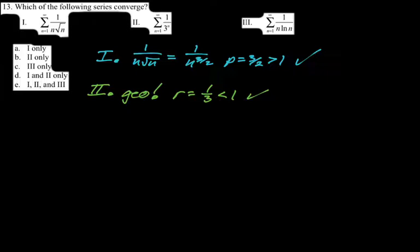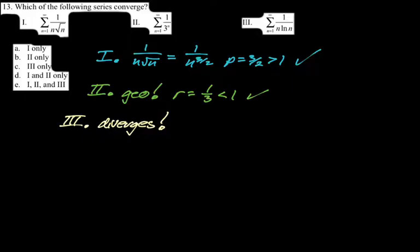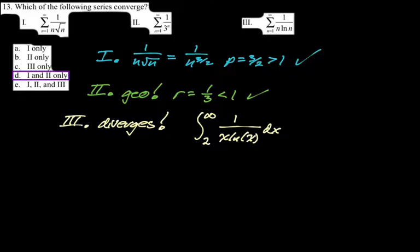Now number three: we ran into one over the natural log of n in a previous video and it diverged. Natural log in the denominator tends to diverge. For this one I would use the integral test. The ratio test would likely give me one, which is inconclusive. So I'll use the integral test, integrating from two to infinity — I start at two because the natural log of one is zero, so you can't start at one anyway.